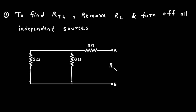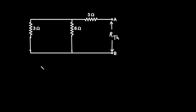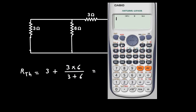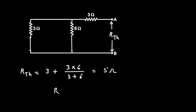Now we can easily find the value of RTH. RTH is equal to: this 3 ohm is in series, so it will be 3 plus the parallel combination of 3 ohm and 6 ohm, which is 3×6 divided by 3+6. Solving this gives 3 plus 2, which equals 5 ohm. So RTH is equal to 5 ohm.